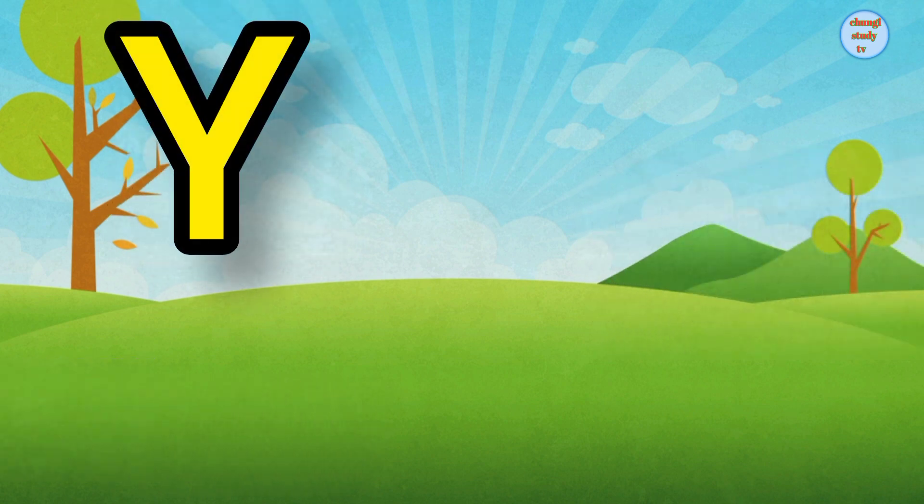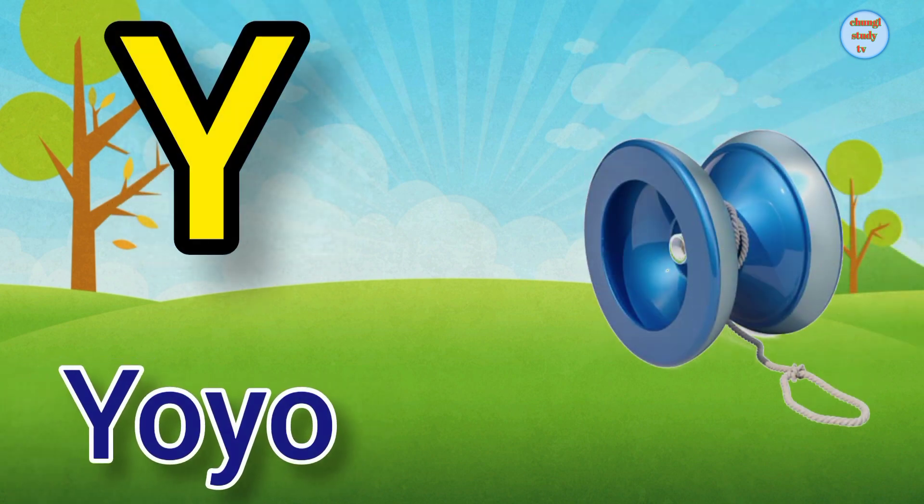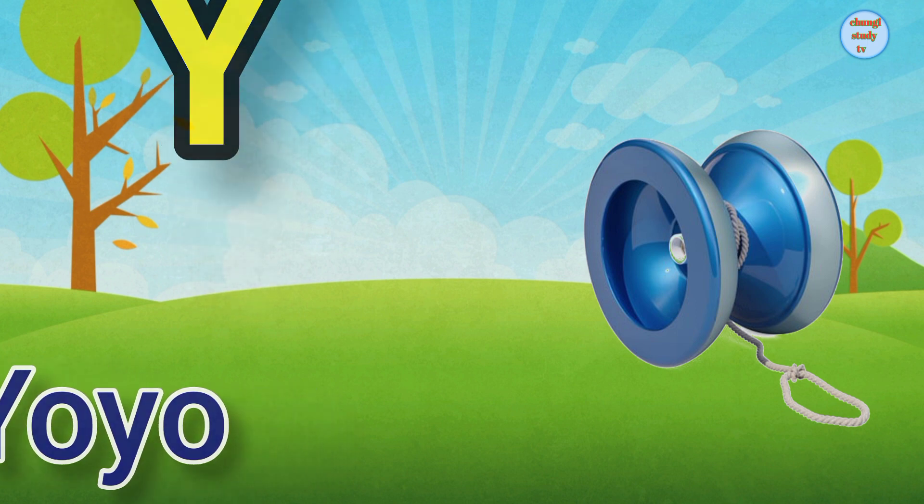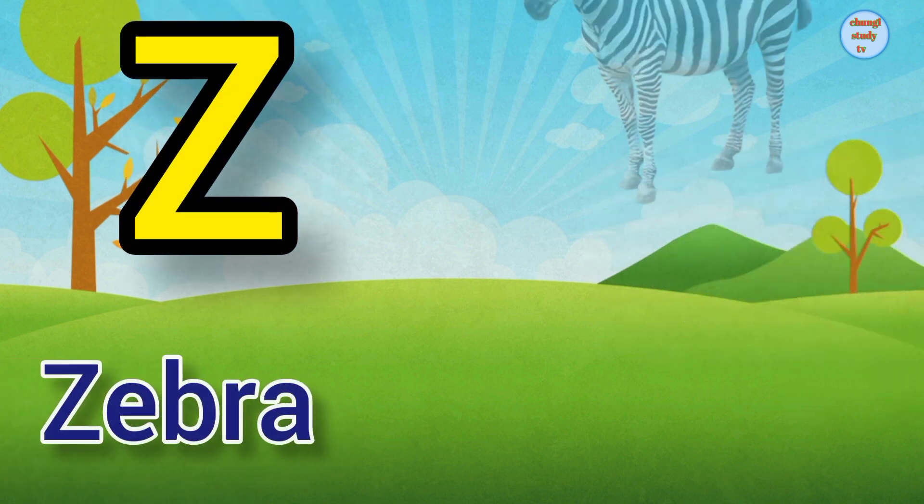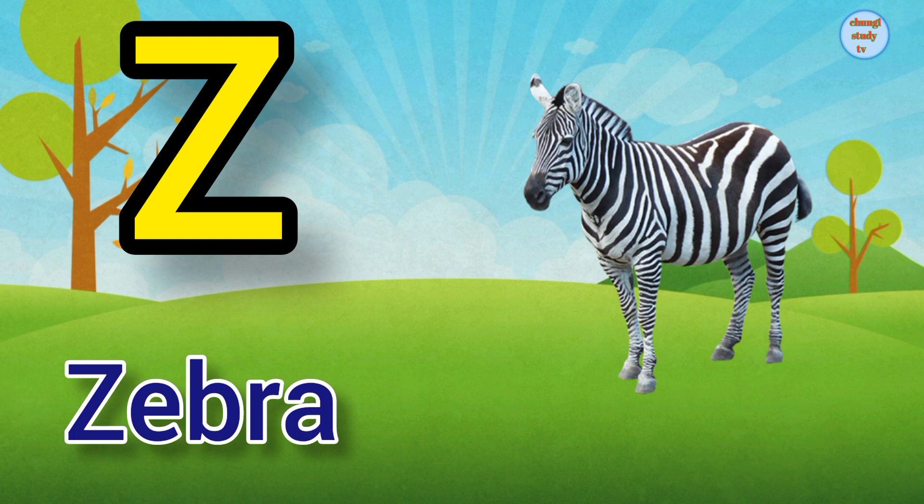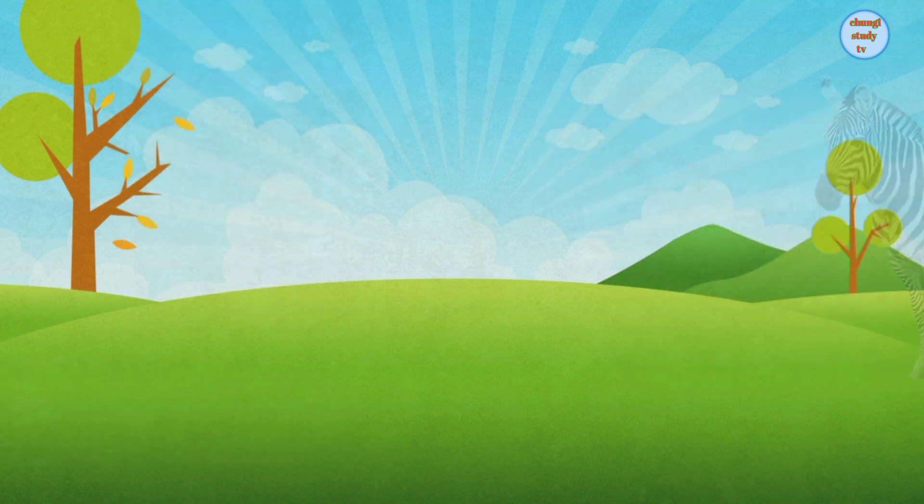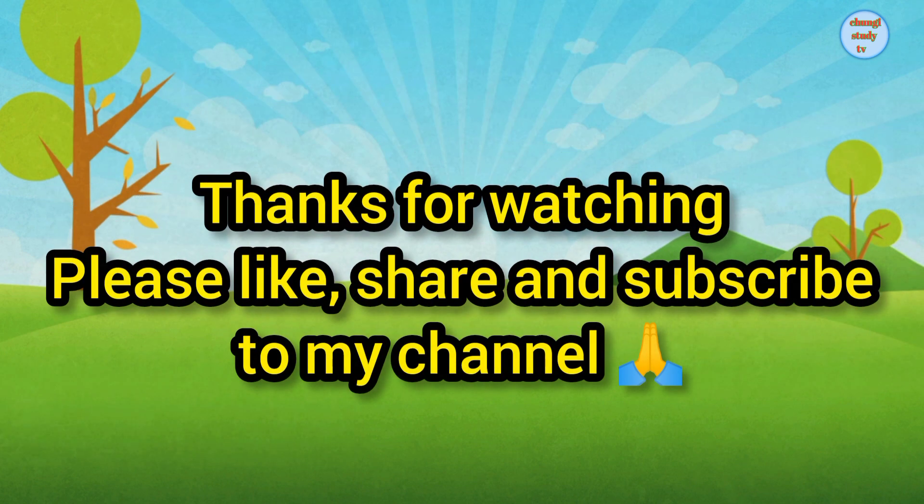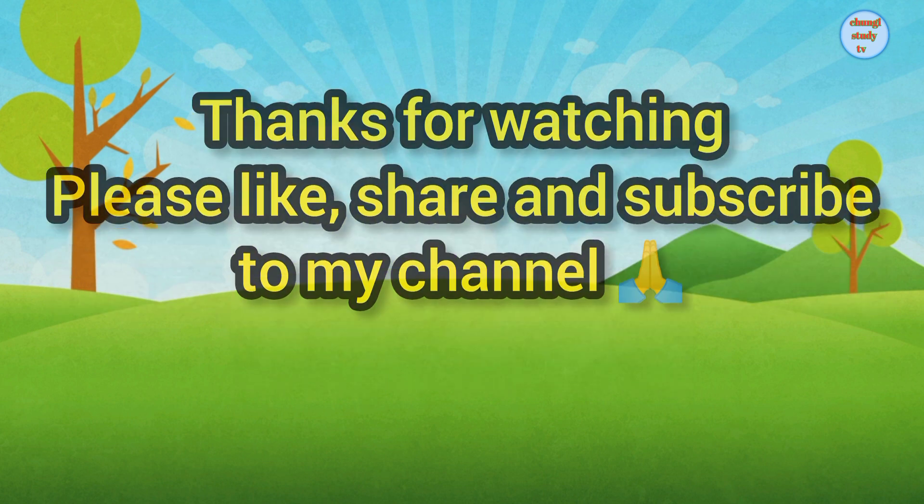Y. Y for Yoyo, Yoyo means yo-yo. Z. Z for Zebra, Zebra means chithidhar ghoda.